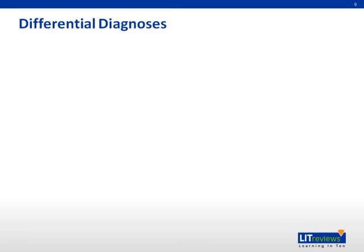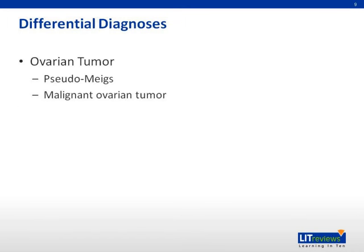Differential diagnoses to Meigs' syndrome include pseudo-Meigs' syndrome and malignant ovarian tumors. Pseudomyxoma peritonei — a peritoneal tumor associated with mucinous adenomas of the appendix, gastrointestinal tract, and ovaries — also similarly presents with an abdominal mass associated with ascites and pleural effusion.